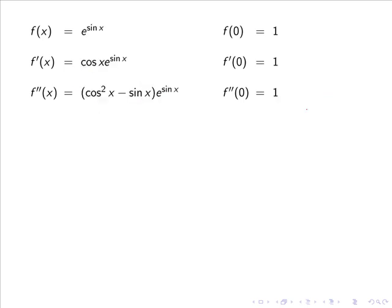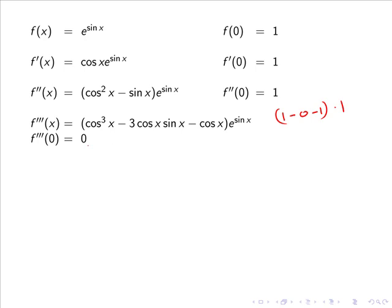So far we have found the first three non-zero terms. Now if we use both the product and chain rule we find that the third derivative gives us cos cubed x minus 3 cos x sin x minus cos x e to the sine x. And if we evaluate this at the point 0 we get cos cubed 0 minus 3 cos 0 sin 0 minus cos 0 e to the sine 0, so we get 1 minus 0 minus 1 multiplied by 1 giving us 0.